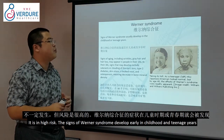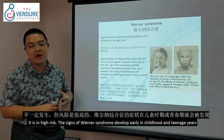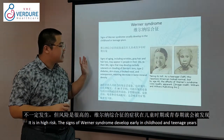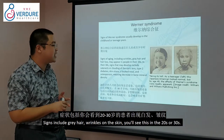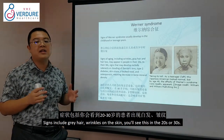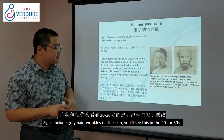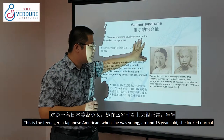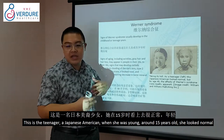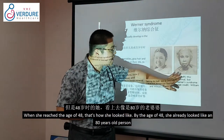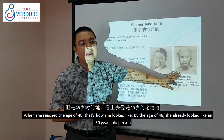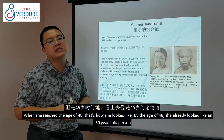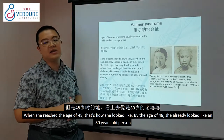Signs of Werner syndrome develop during childhood and teenage years, including gray hair and skin wrinkles visible in the twenties to thirties. For example, a Japanese American woman looked normal at age 15, but by age 48 she already looked like an 80-year-old person — this is Werner syndrome.